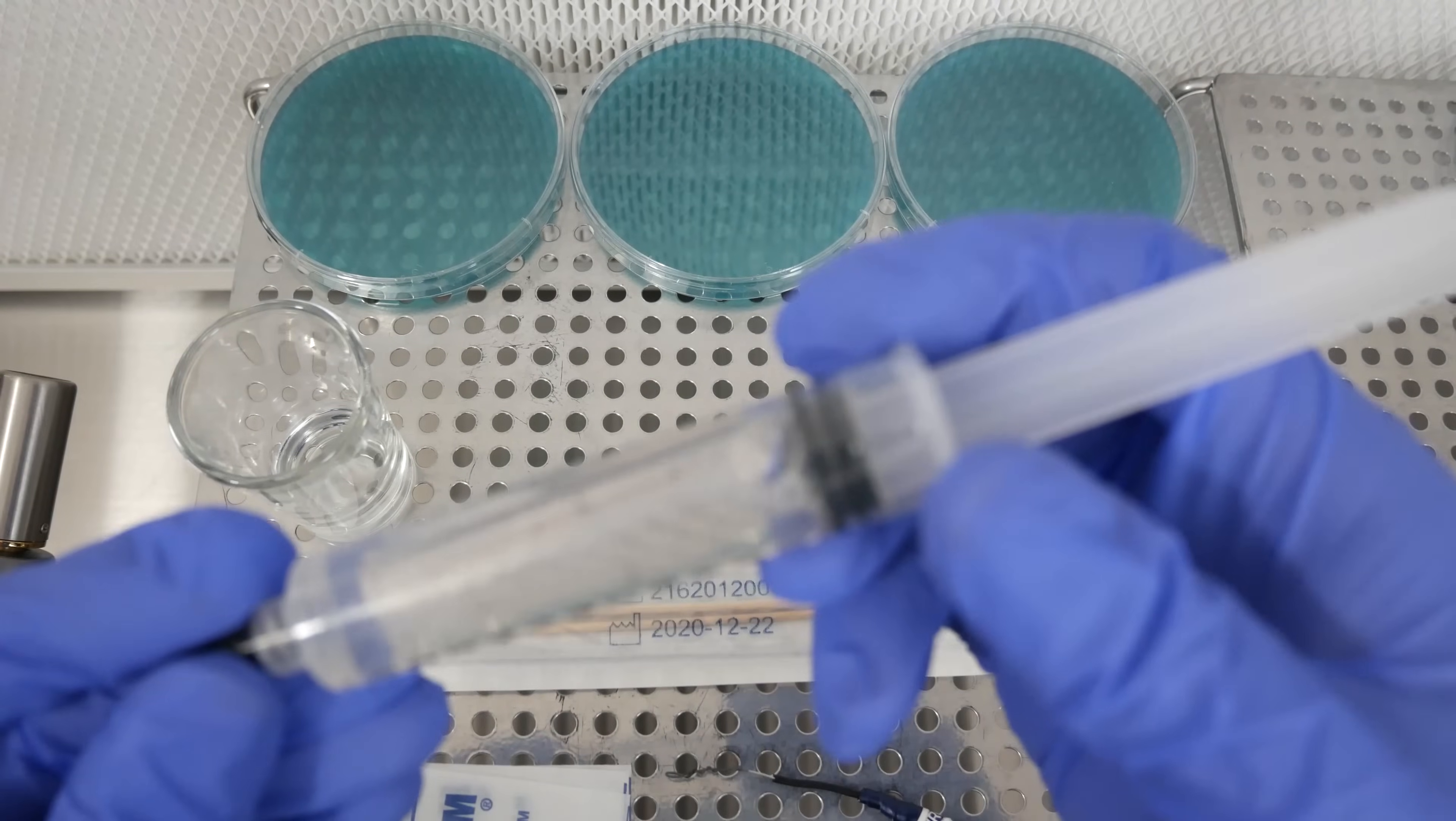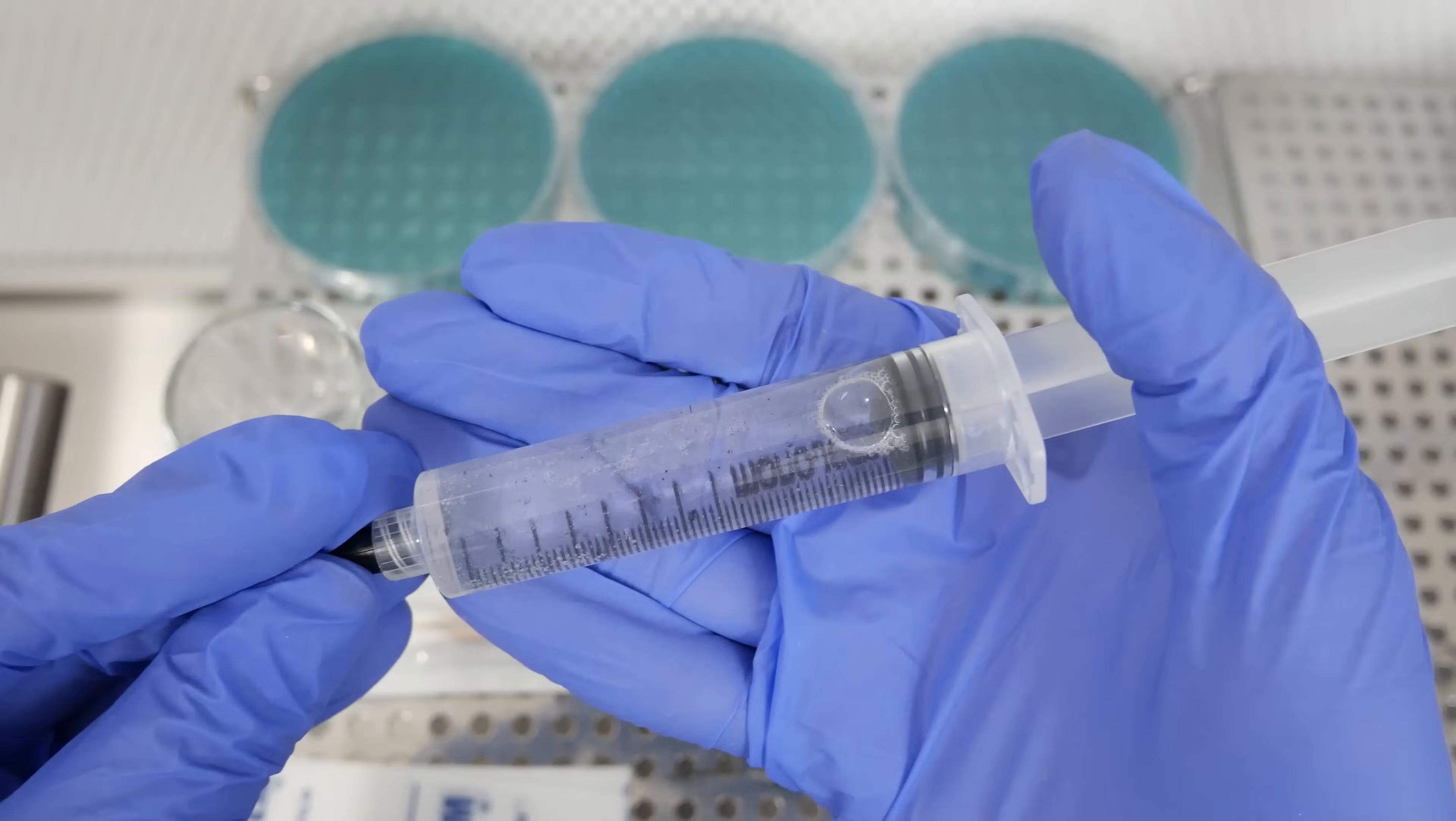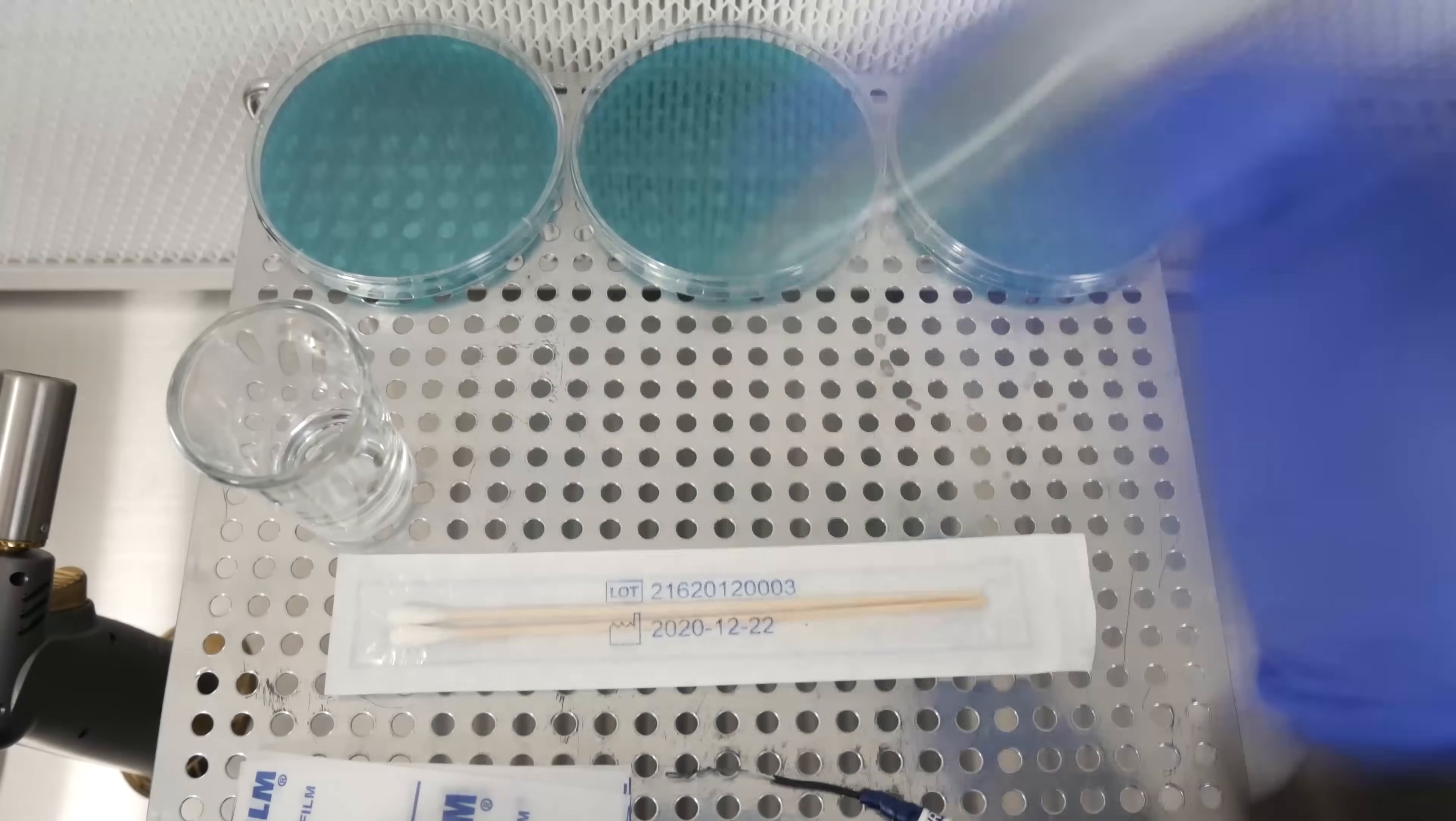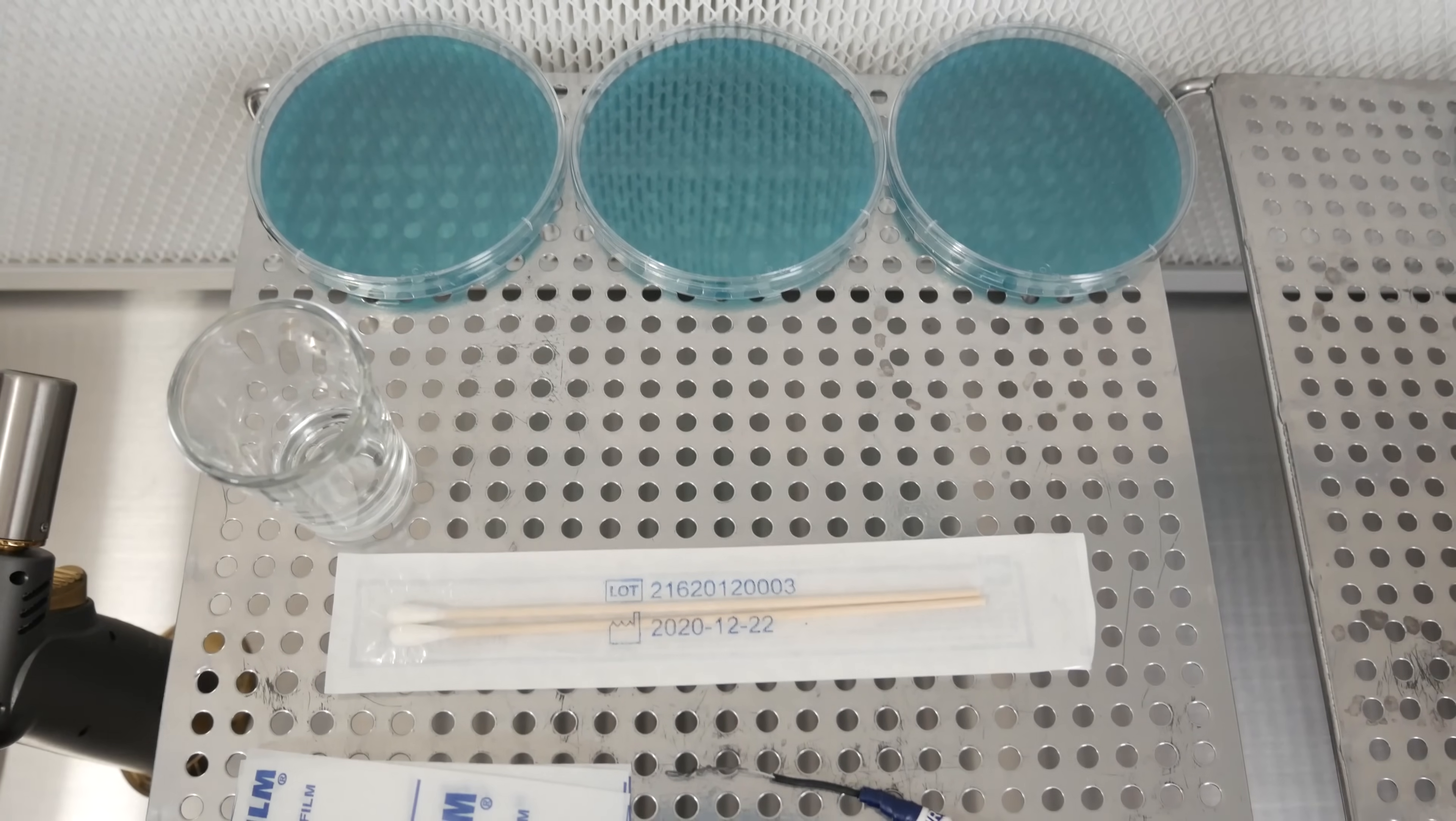Each individual black speck of spore that you see in the solution contains like hundreds or thousands of microscopic spores that you can't see with your eyes. When you shake it apart in here, you're going to distribute those microscopic spores among the sterile water that's inside the syringe.